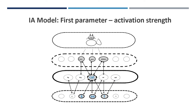Two activation parameters account for the selection of the target word, or when errors occur, a related word. The first is activation strength. Activation strength of the word 'cat' must be stronger than that of related words such as 'dog' or 'mat.' The same is true at the phonological level — the phoneme for a sound must be stronger than similar phonemes.